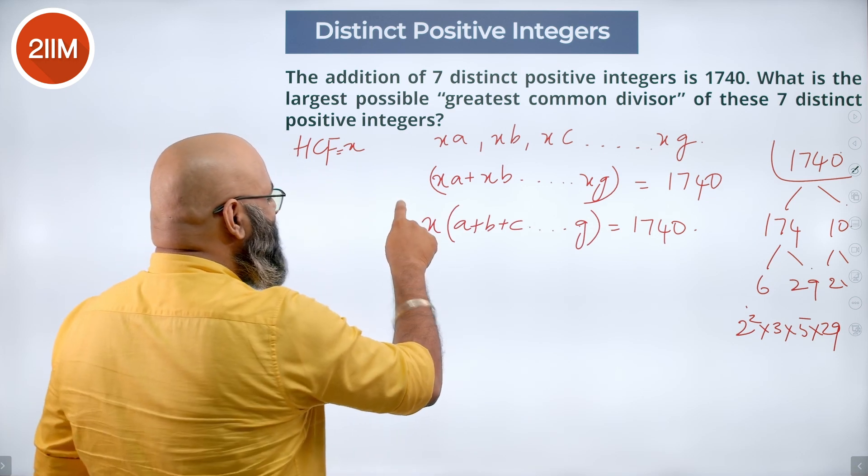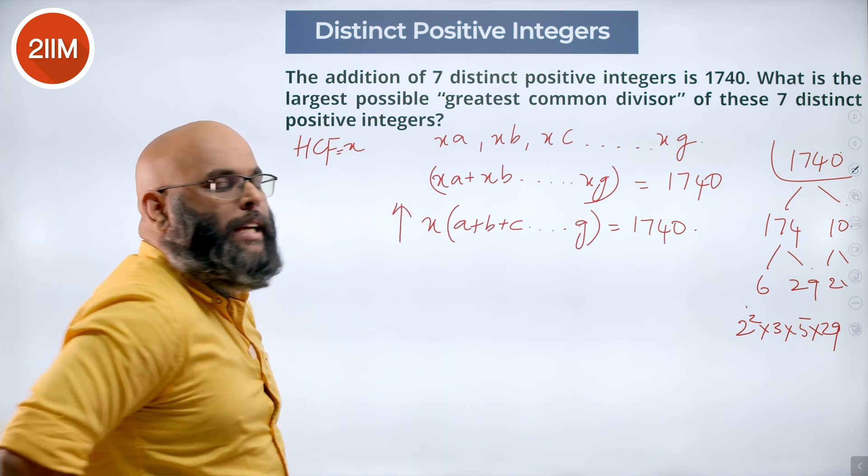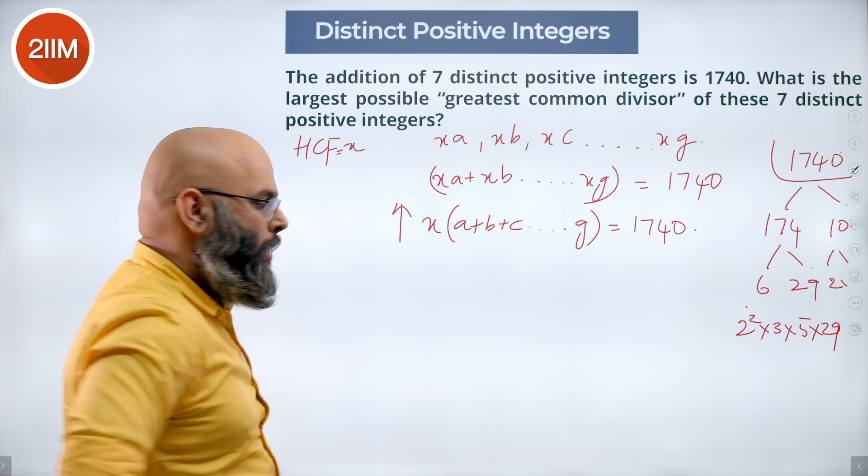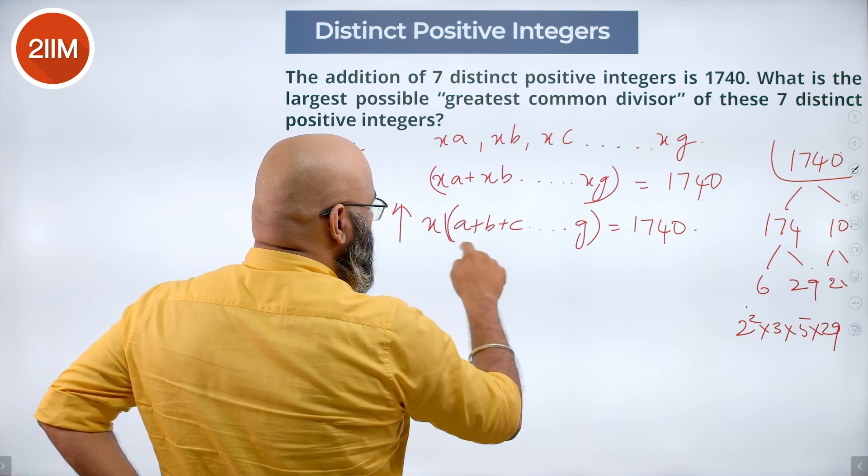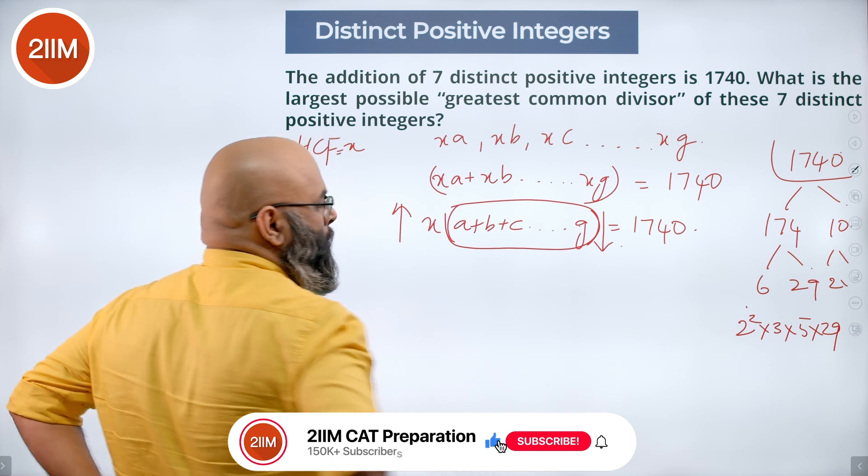And also since this has to be the highest, X has to be the largest possible HCF, the sum of this particular case should be as minimum as possible.